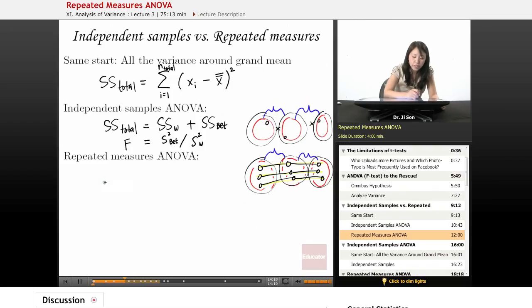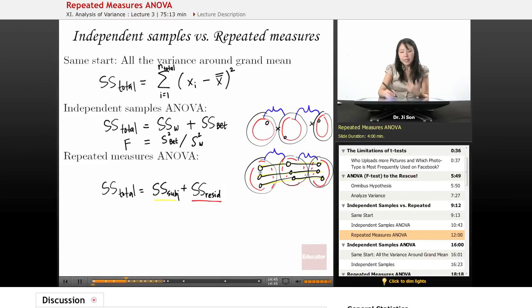So in repeated measures, the sum of squares total actually breaks down slightly differently, even though it's still this idea of breaking down the sum of squares total. Now it actually splits up into sum of squares subject. These individual links, that's the yellow part, plus the sum of squares within, just like before. Except now we call it residual because we've taken out the sum of the variability that comes from the individual differences.